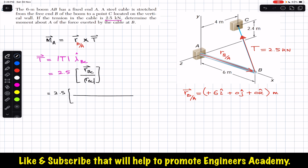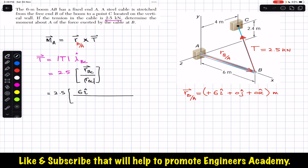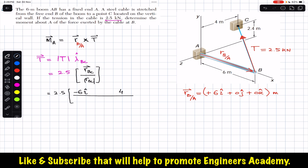We start from B and try to reach point C by moving in the x, y, and z directions. From B we travel 6 meters in the negative x-direction, so we write −6i. Then we travel 4 meters in the negative z-direction, so we write −4k. Then from there we travel 2.4 meters in the positive j-direction, so we write +2.4j.